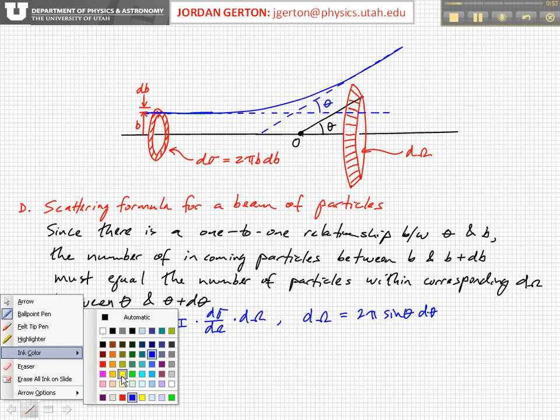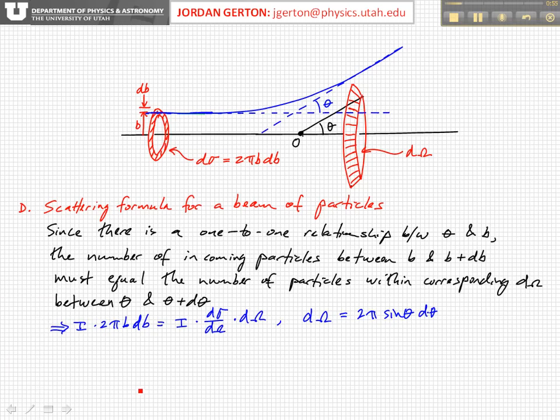And so with these considerations, we can cancel the I's, and we get 2π b db equals dσ/dω times 2π sin θ dθ. We cancel the 2π's, and we're left with dσ/dω.